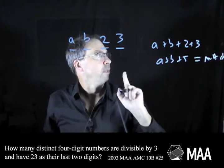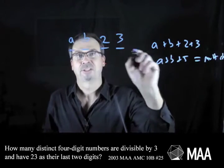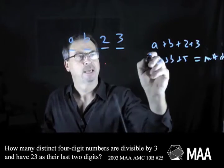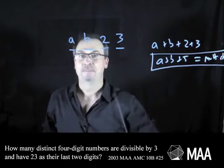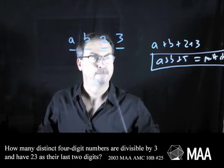So we want to know how many distinct four-digit numbers are there like this. I want how many distinct four-digit numbers are there satisfying this condition? a, b plus five adding up to a multiple of three. All right.